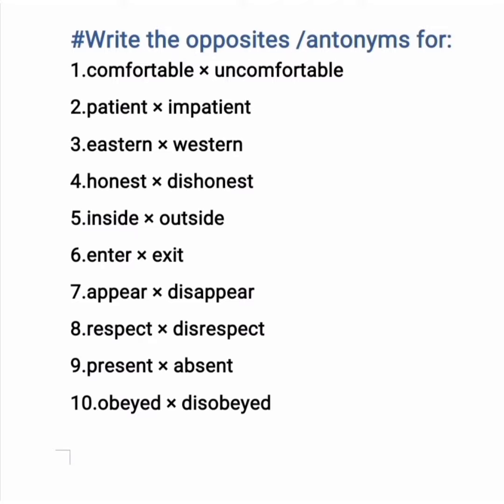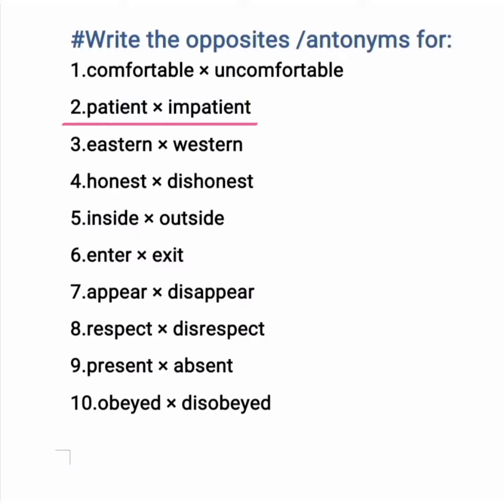See children, the first one is comfortable and the opposite of comfortable is uncomfortable. Second one is patient and the opposite of patient is impatient. Children, can you see here the cross sign? In opposite words we are using this cross sign, while in other things we are using a dash.